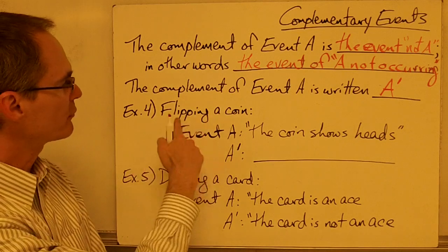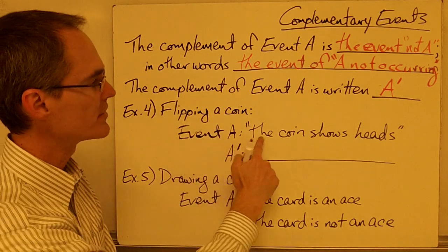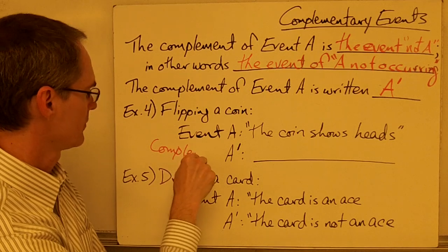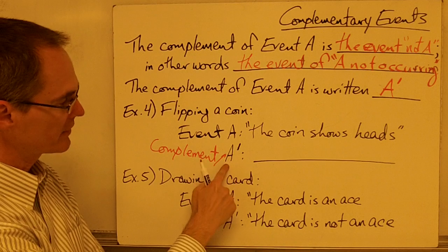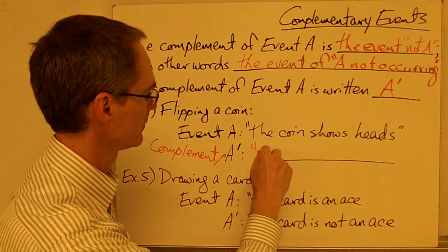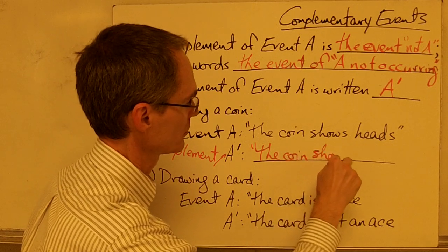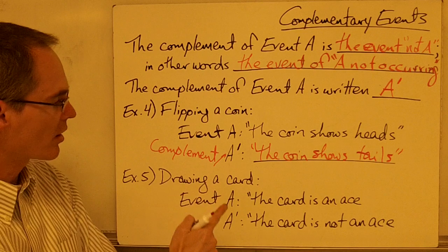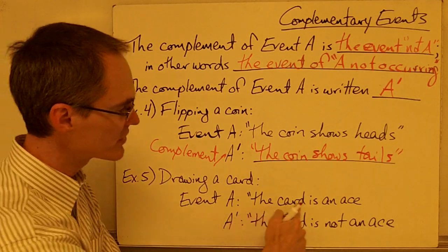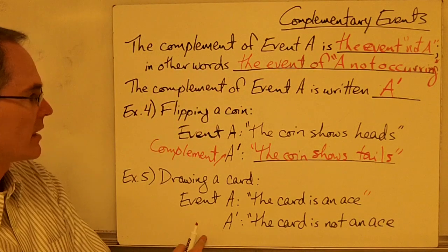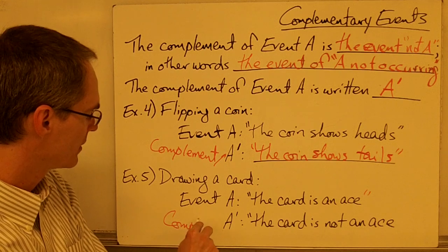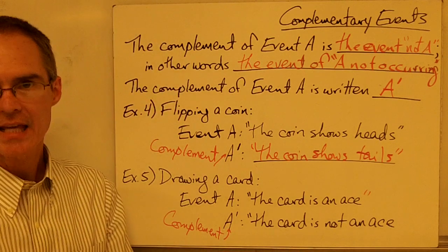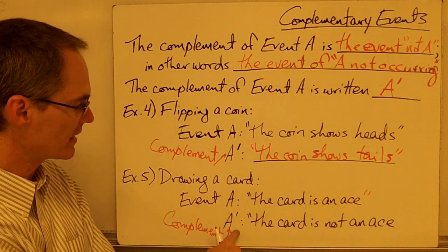An example of a complement: if we're talking about flipping a coin and event A is the coin shows heads, then the complement of event A — that is A prime or A complement — would be the coin shows tails. In example number five, if we are drawing a card from a standard deck and event A is the card is an ace, then A prime, the complementary event, would be the card is not an ace. It's kind of like the opposite of event A is the complement of event A.